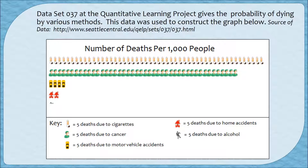Here's what an appropriately created pictograph looks like. In this case, all images are approximately the same width and height, and every image represents 5 deaths. We can now see that there are many more deaths due to cancer than to motor vehicle accidents, whereas before they looked almost the same. Also, we don't even get a full picture for deaths due to alcohol — only a fifth of the image — since there was only 1 per 1,000.